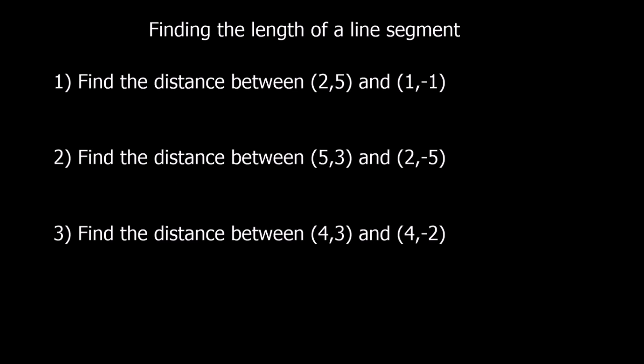Okay, so see if you can get these questions. Pause the video. Okay, the first one. Difference between the x's is just 1, and the difference between the y's is 6. So 1 squared plus 6 squared equals our distance. 1 squared is 1, 6 squared is 36, equals x squared. So that's 37. So x is the square root of 37. We'll leave it in that form.